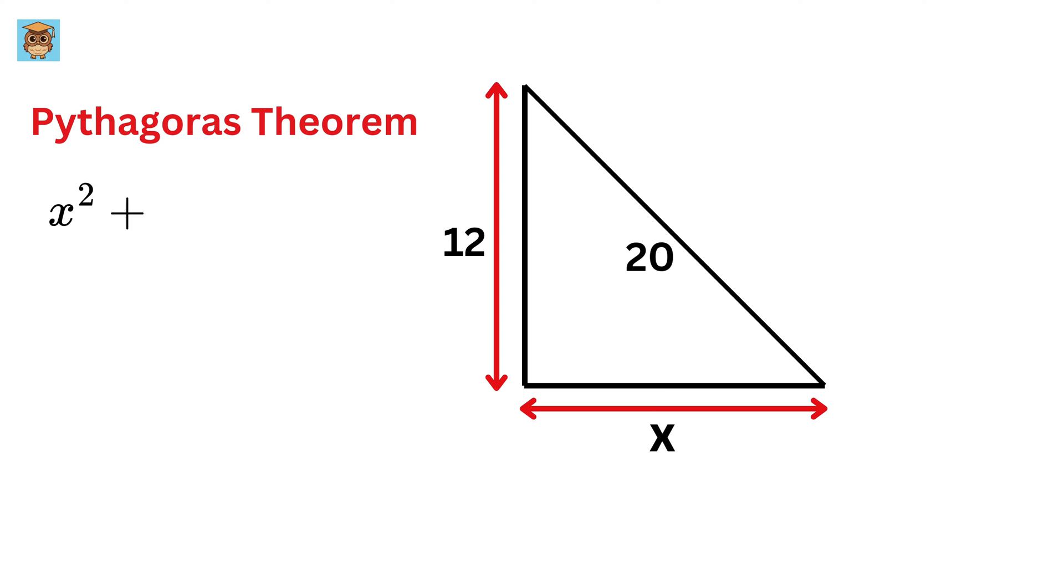We get x square plus 12 square equals 20 square. So, x equals 400 minus 144, or 256. This gives x equals square root of this, or x equals 16 units, and that's it.